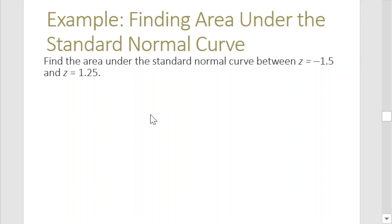So we have here: find the area under the standard normal curve between z equals negative 1.5 and z equals positive 1.25. Let us first draw a normal curve.